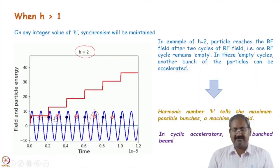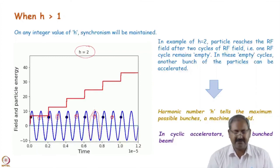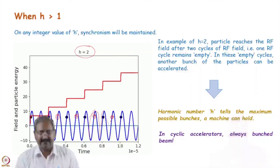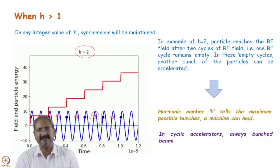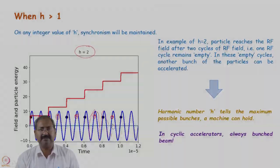Only during a certain portion of the RF cycle can a particle receive acceleration; during the rest it would be decelerated. Therefore we cannot have a continuous beam through a cyclic accelerator — cyclic accelerators will always produce a bunched beam.